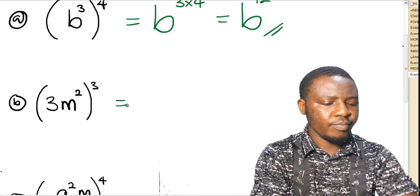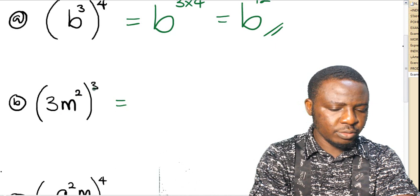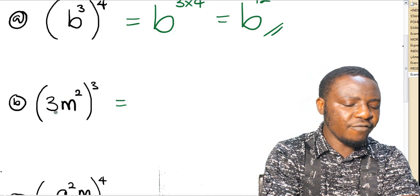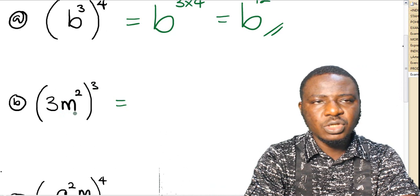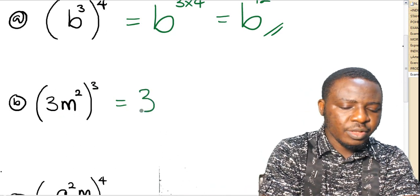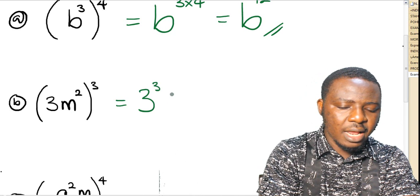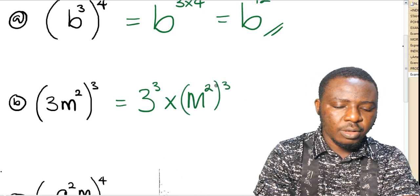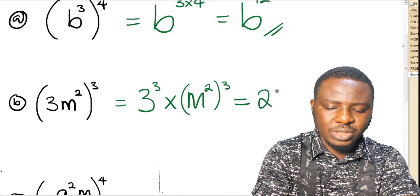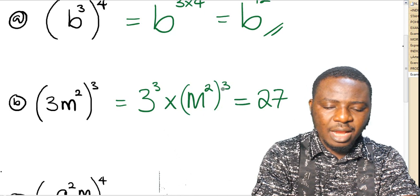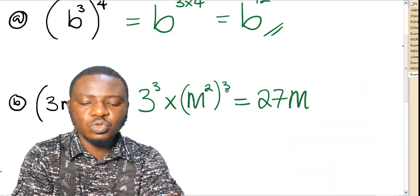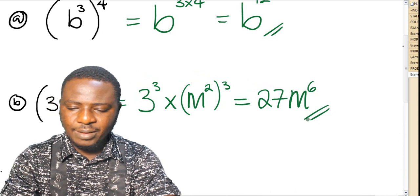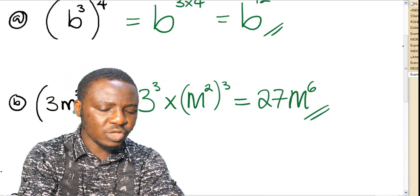Example B: 3m squared, all cubed. Now, this cube is affecting every term in the bracket, so that means we are going to cube every term in the bracket. So, this can be written as 3 cubed times m squared cubed. This can be simplified further: 3 cubed is 27, and applying the product law of indices to m squared cubed gives m raised to the power of 2 times 3, which is 6. So, your answer is 27m to the power of 6. Take note: the cube affects 3 as well as m squared.